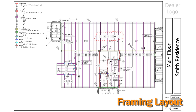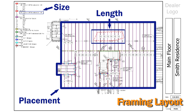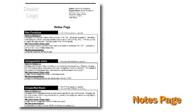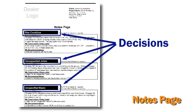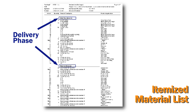A variety of reports are available: the framing layout, which shows the size, length, and placement of framing members; the notes page, which clarifies the decisions that were made throughout the process; and the itemized material list, which separates products by delivery phase — each product is cross-referenced by application.